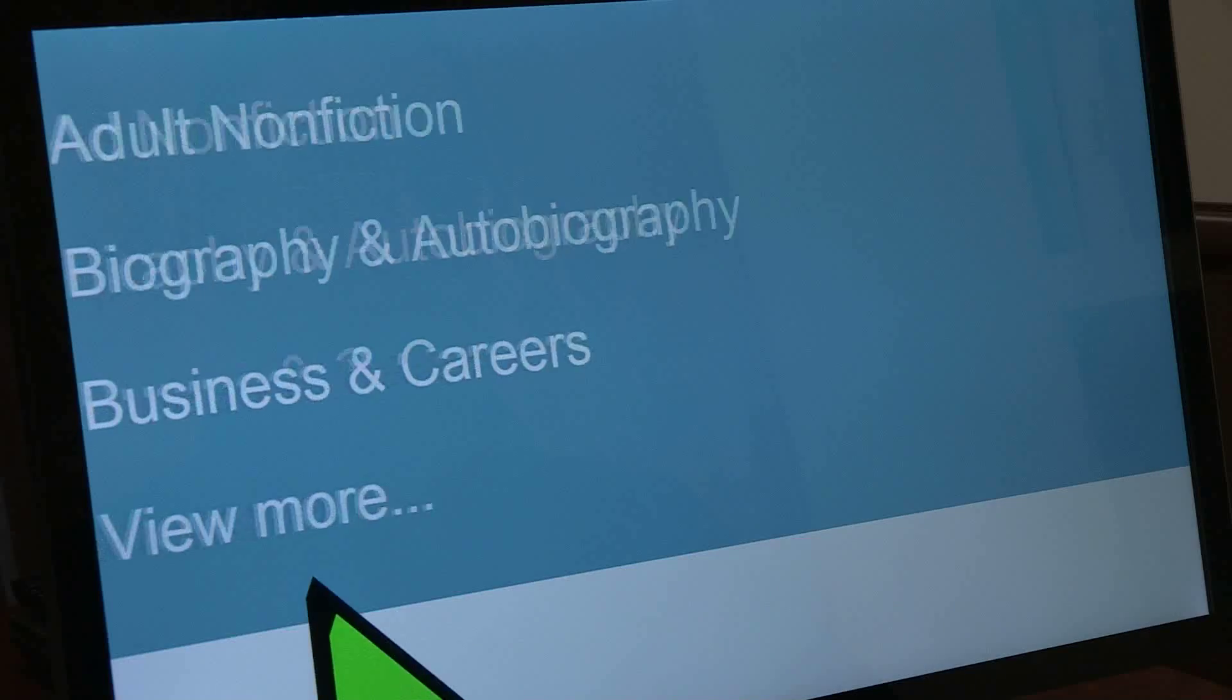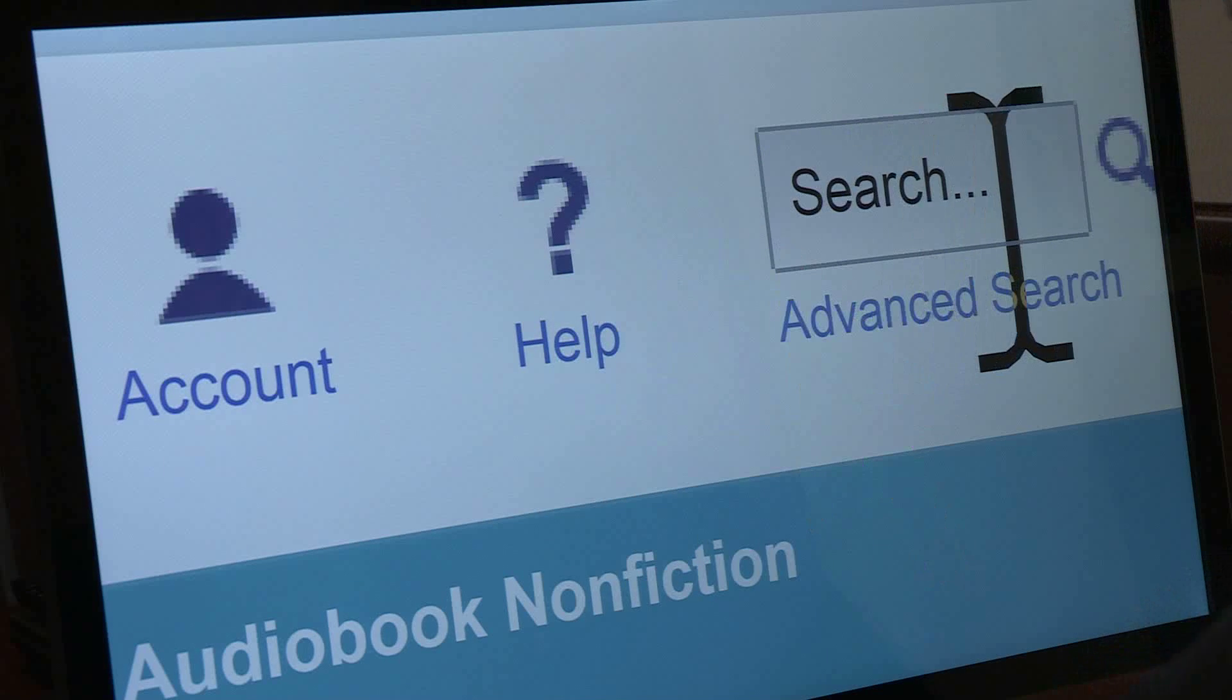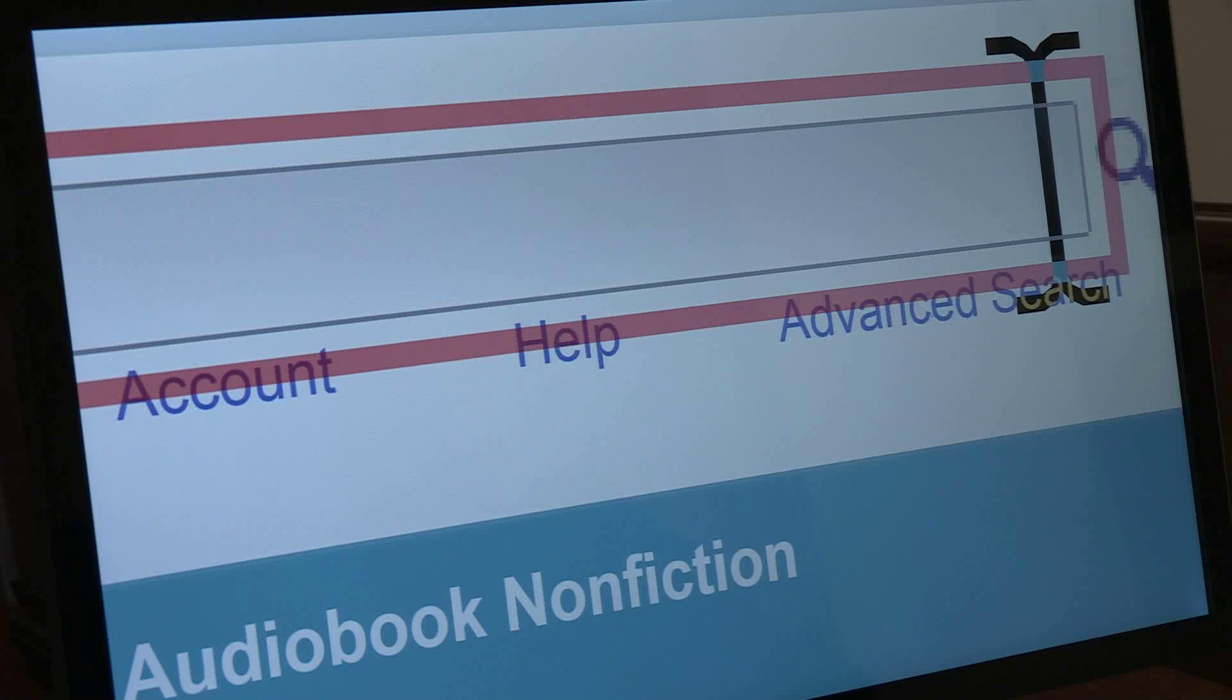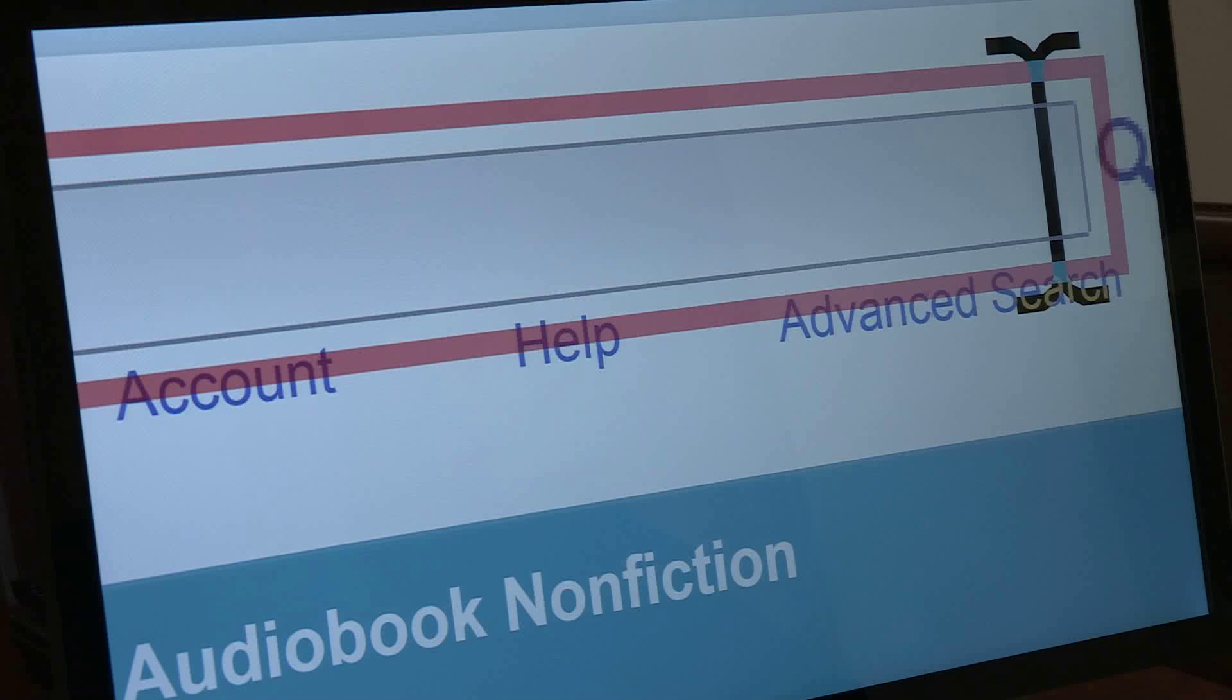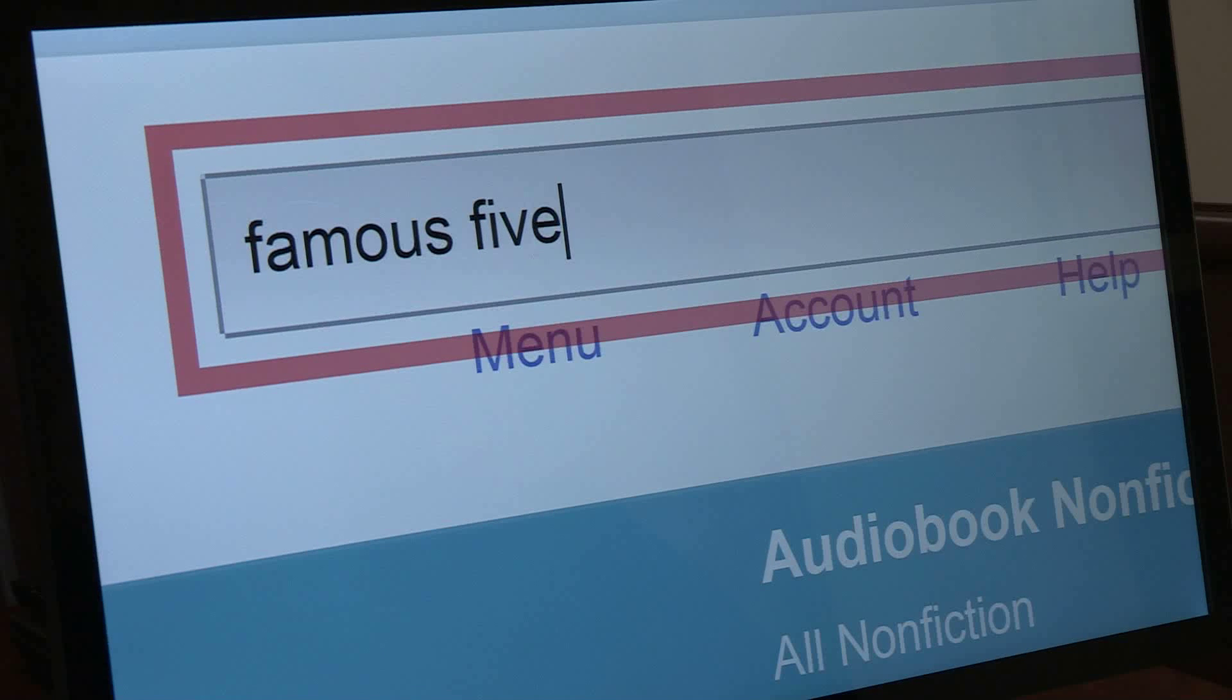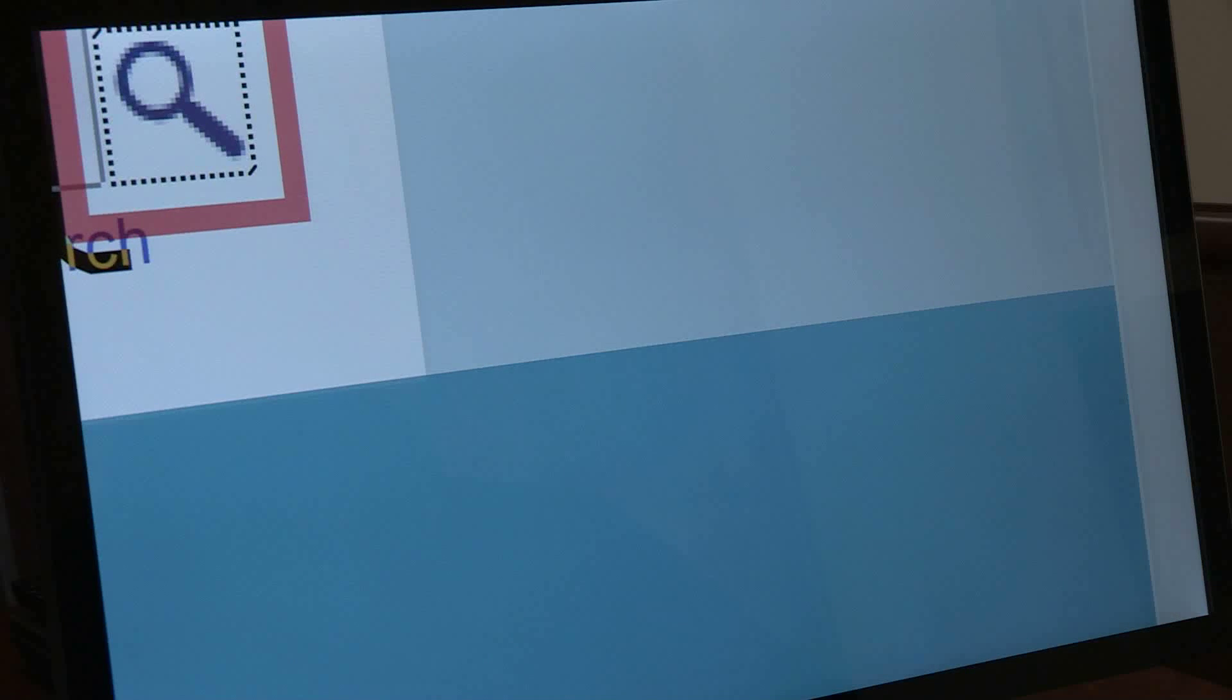Finding a book is really easy. On the right-hand side at the top, you have a search box. You can use this box to type in the name of a book, the name of an author, or a combination of both. For example, one that I've listened to recently with my children is an old Enid Blyton book, Famous Five.